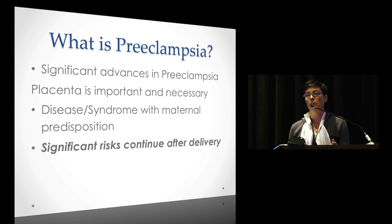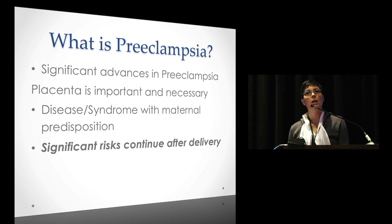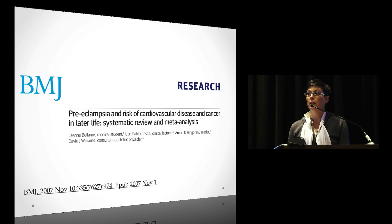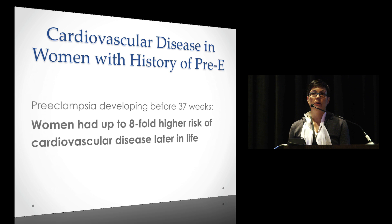The cure — as I used to teach when I was a chief resident for OB — is just deliver the patient and they're cured. Well, that is apparently not entirely true. A big meta-analysis looked at data on what happens to these women after they deliver. If they have preeclampsia before 37 weeks, they have an eight-fold higher risk of having cardiovascular disease later in life. That's huge.